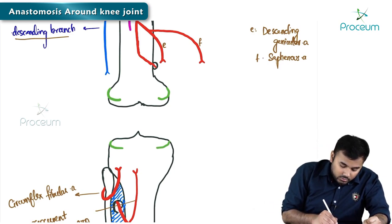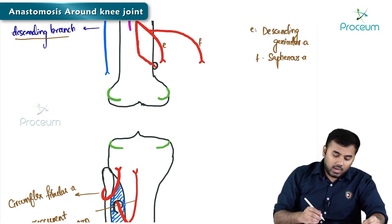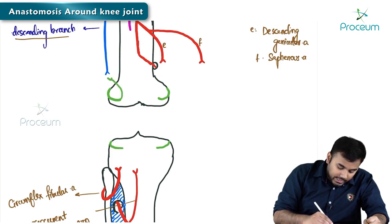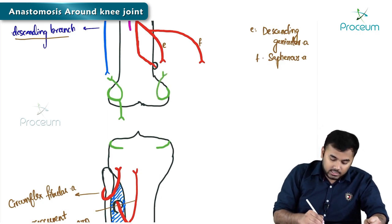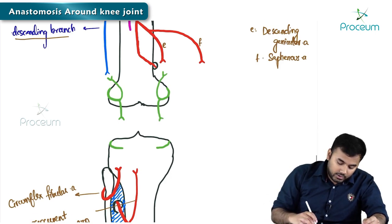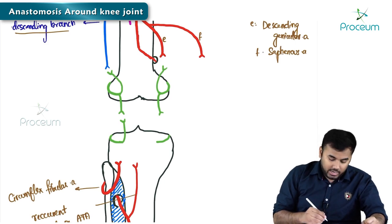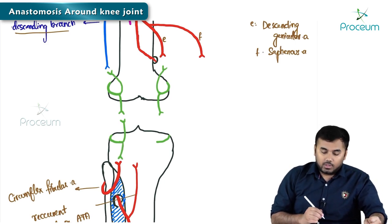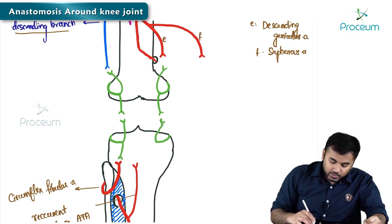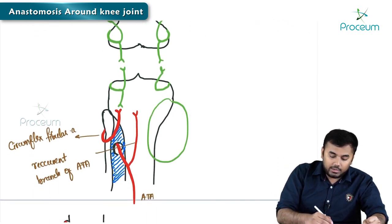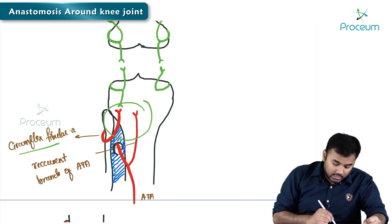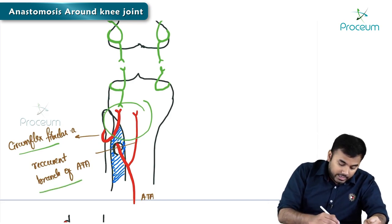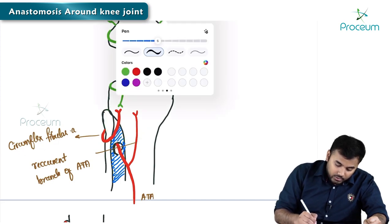These genicular branches will again divide into two: ascending branch and descending branch. The upper ones divide into ascending and descending branches. The lower ones also divide into ascending and descending branches. On the inferior lateral side, there are two arteries to anastomose: the circumflex fibular artery and the recurrent branch of the anterior tibial artery.